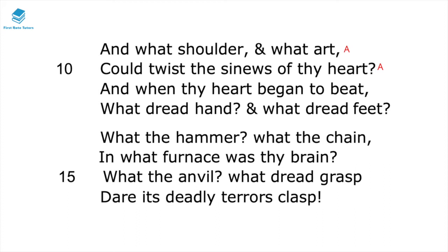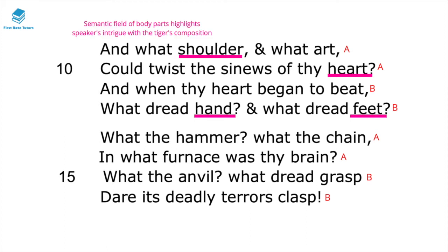Carrying on with the rhyme scheme, stanza three is AABB and stanza four is AABB. In the third stanza he references the shoulder, the heart, the hand, and the feet. This semantic field of body parts highlights the speaker's intrigue with the tiger's composition — how it's built and created.